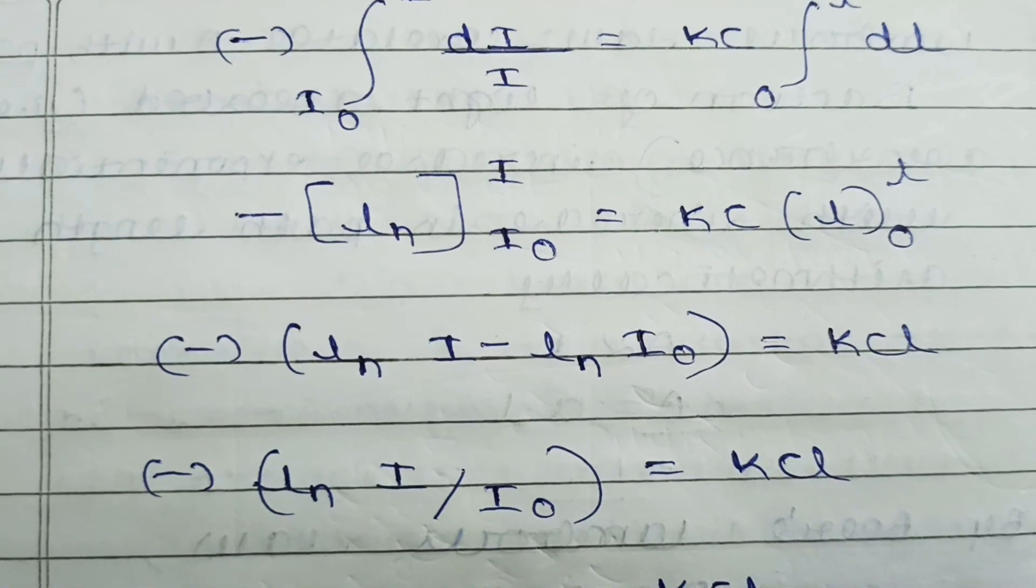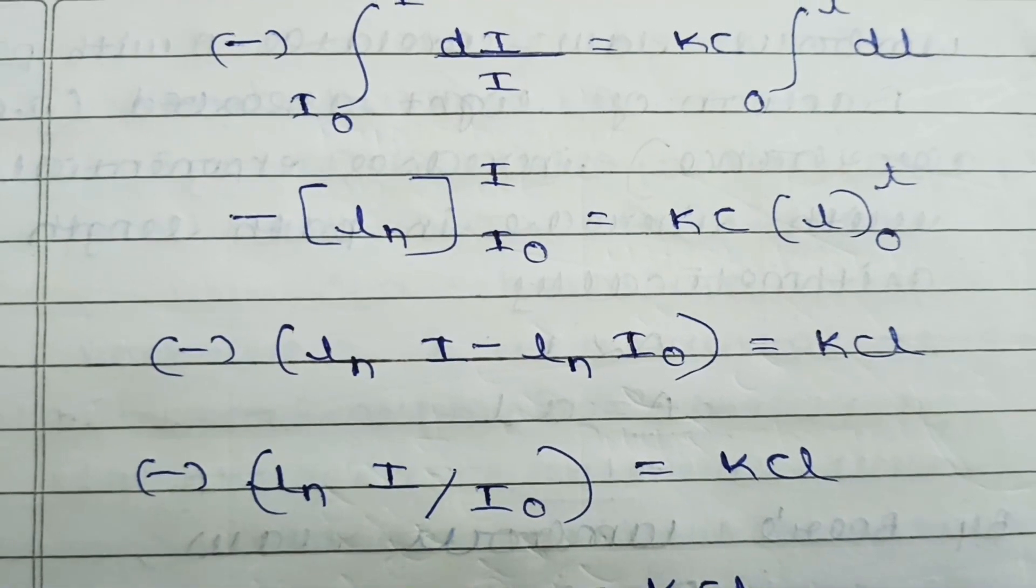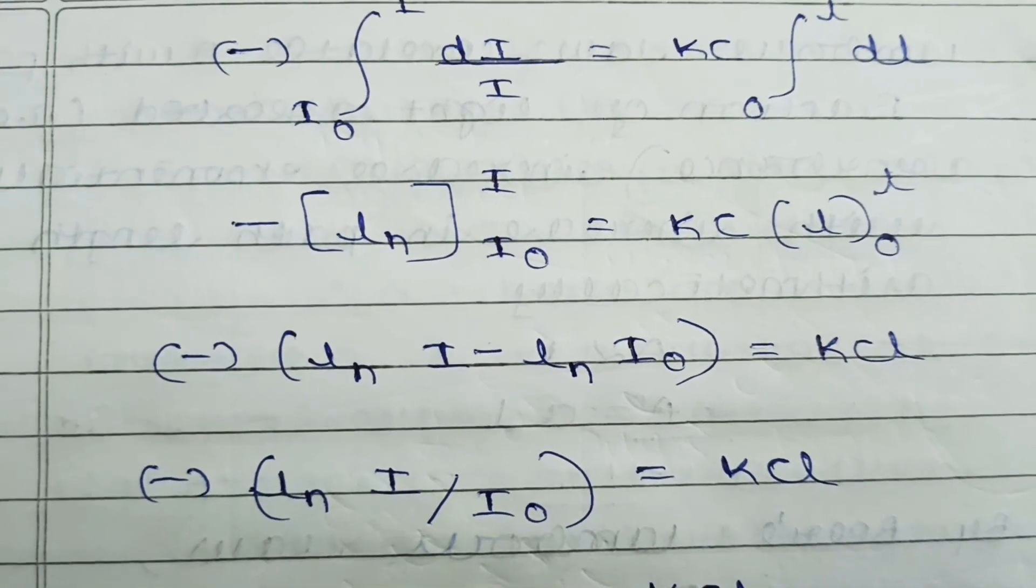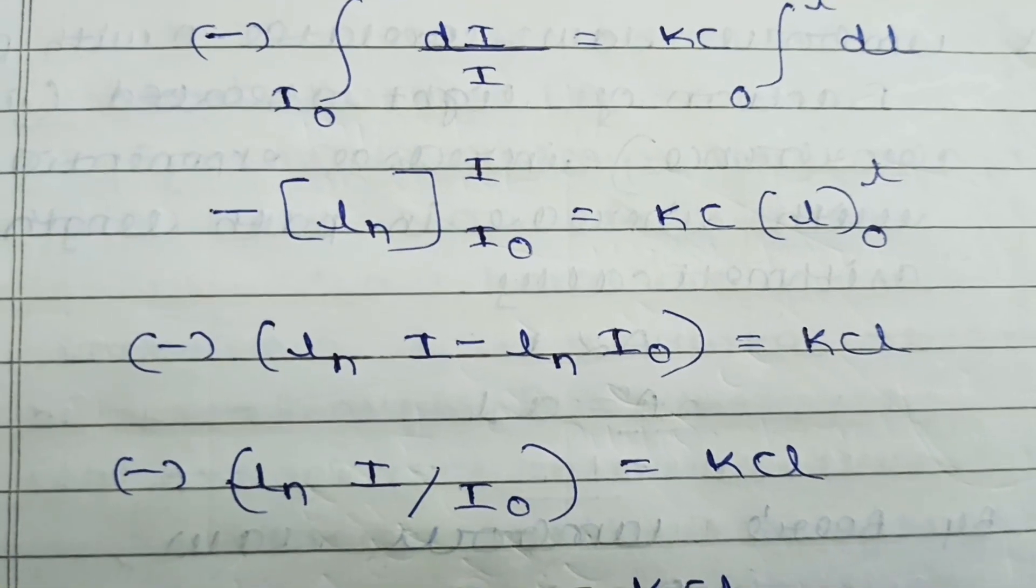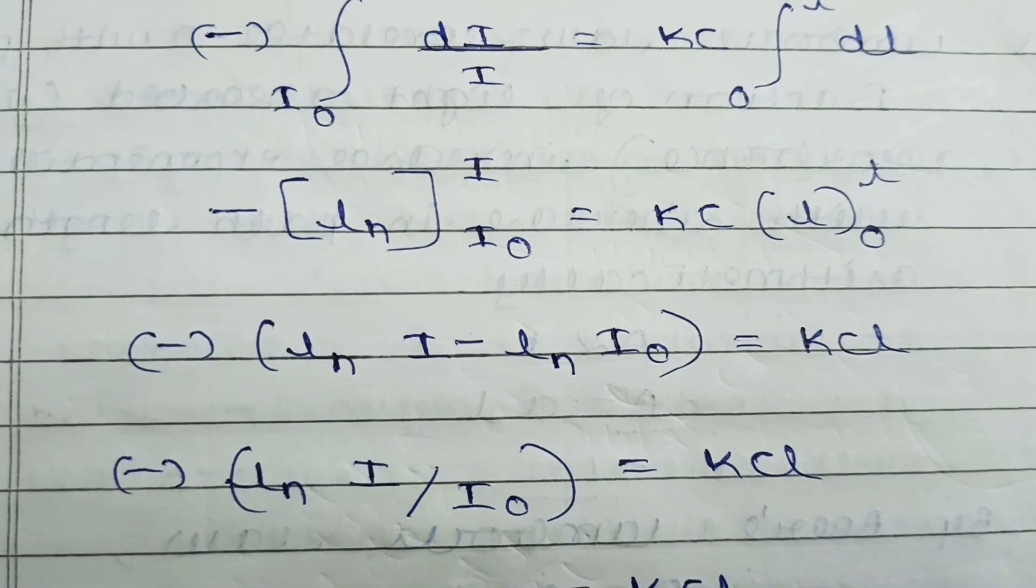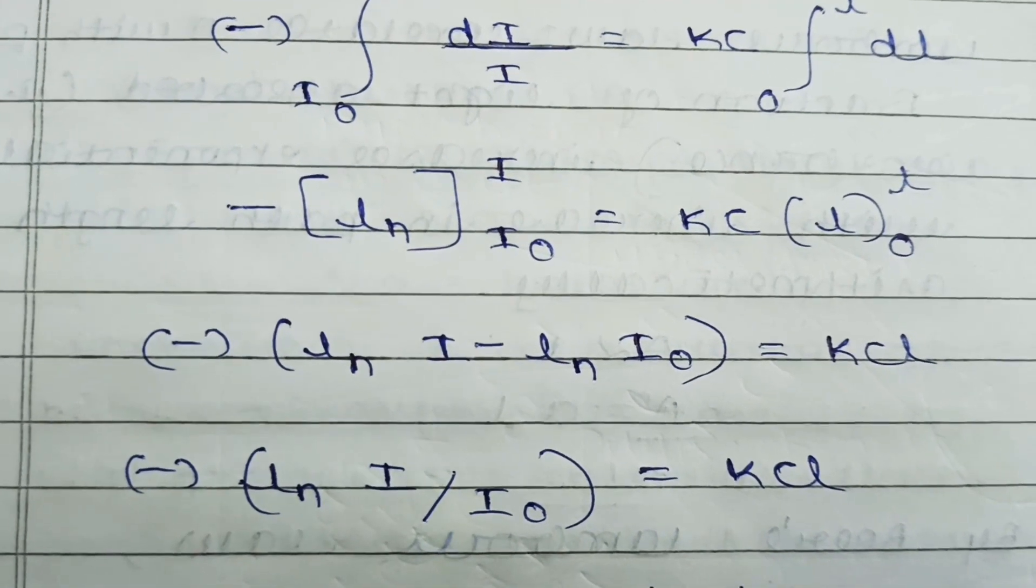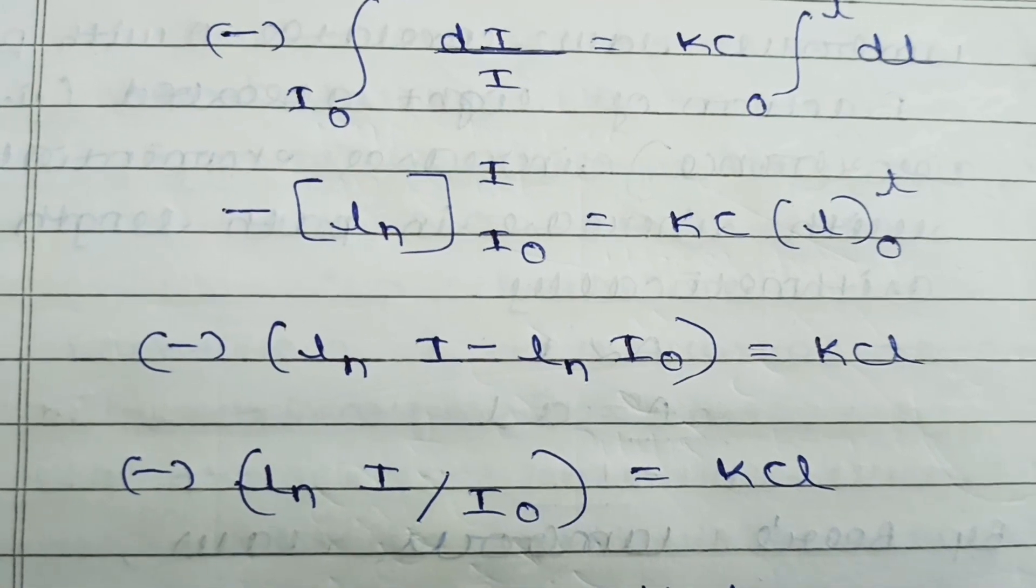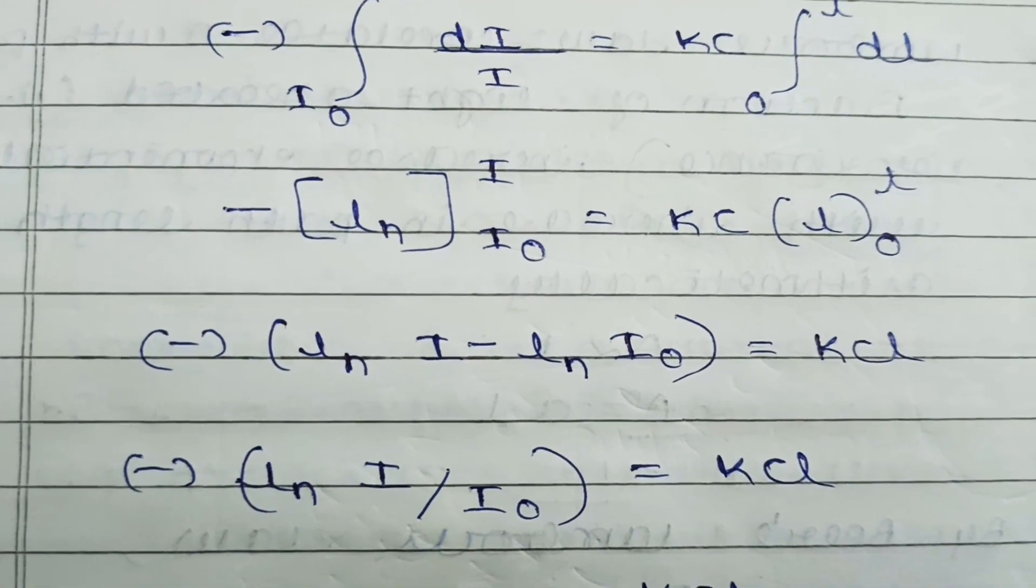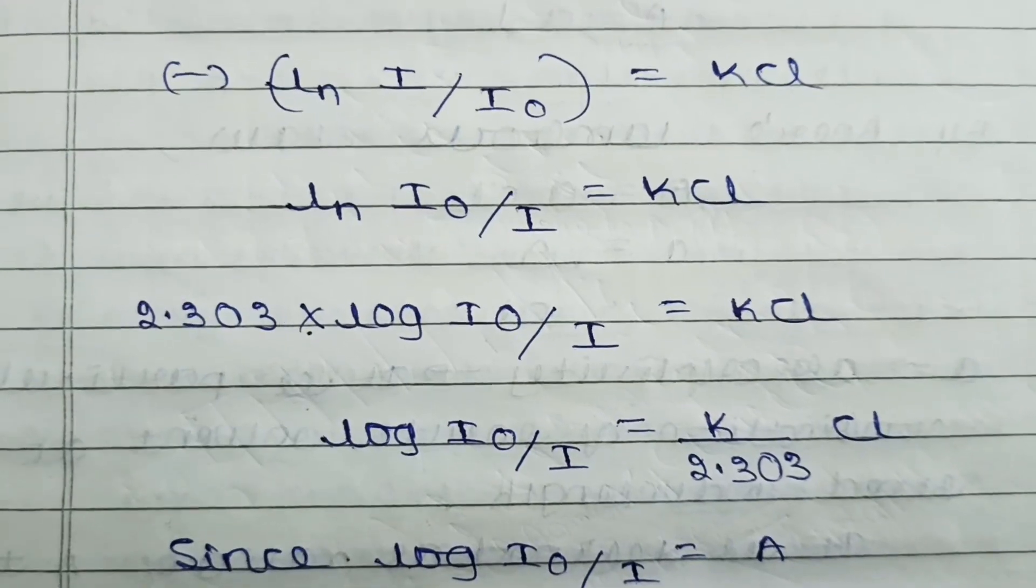In the fourth step, negative sign. Ln A minus Ln B becomes Ln A divided by Ln B. That is negative sign times Ln I divided by I₀. Ln I minus Ln I₀ has become Ln I divided by I₀ equals KCL.